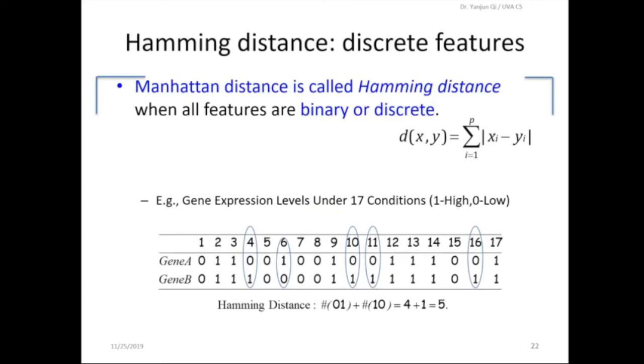And the classic string distance called Hamming distance, which we normally learn from our algorithm class, is in fact something called Manhattan distance. It's actually the L1 if your features are binary or symbolic.